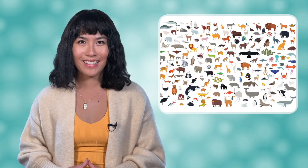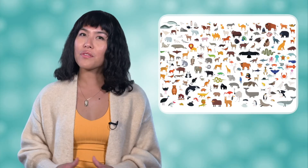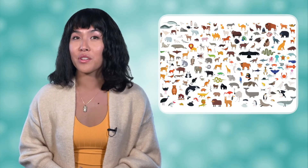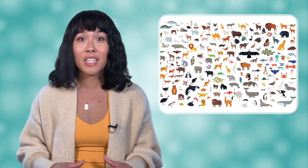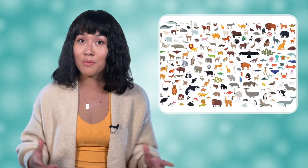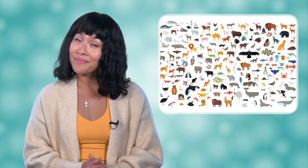The animal kingdom is the largest of all of the kingdoms, with over 9 million species. Can you think of some of the key characteristics that scientists use to identify organisms as animals? When determining if an organism is an animal, scientists use five main characteristics.